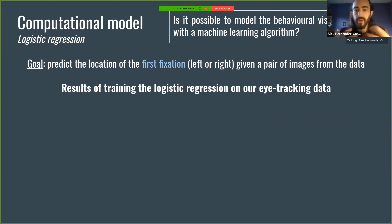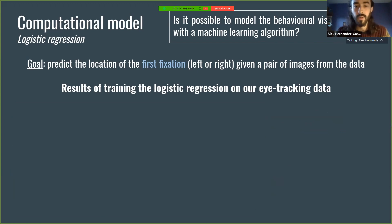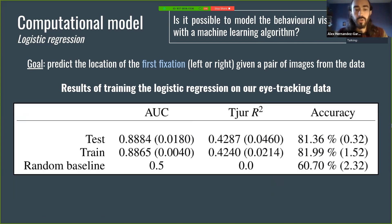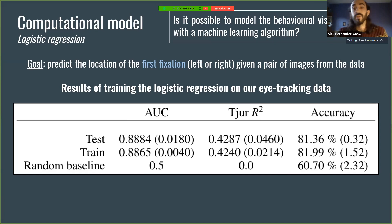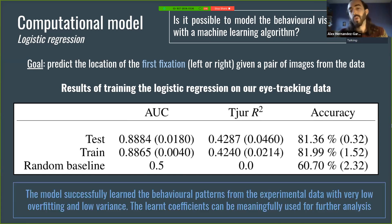We trained this logistic regression model to predict which image — left or right — was fixated first. And the model actually performed very well, which is good news. For example, it predicted which image was fixated first with about 81–82% accuracy and a high area under the curve. This tells us that the behavioral data could be predicted and learned by the computational model, which means we can further use the coefficients that the model learned.